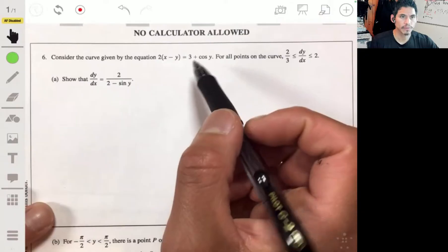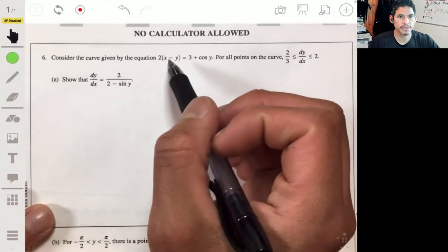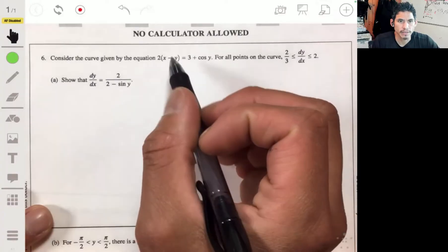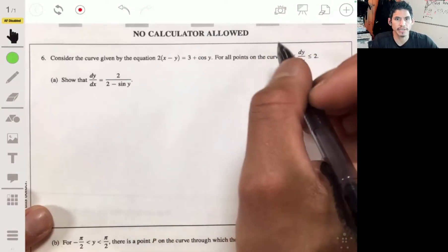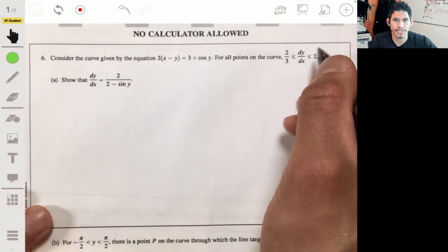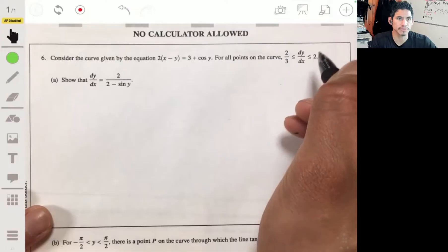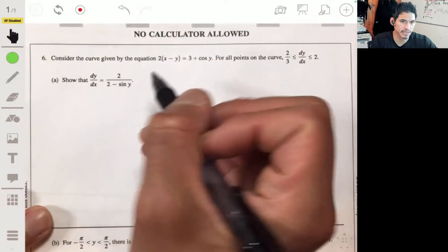All right, problem six. We have this equation two times the quantity of x minus y equals three plus the cosine of y, and we're told that for all points on the curve the derivative dy/dx is between two-thirds and two, and we have to show that dy/dx is equal to two over two minus the sine of y.